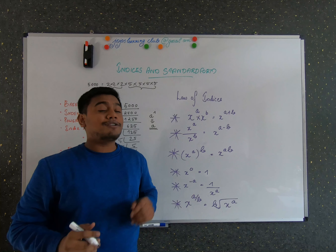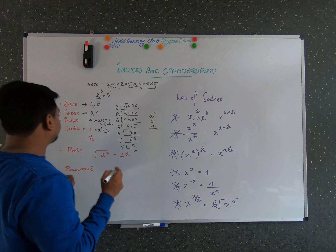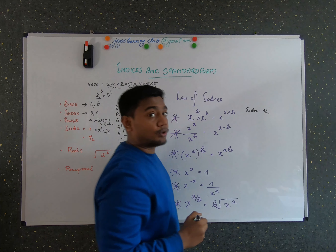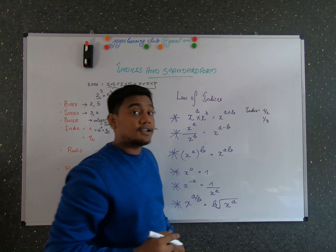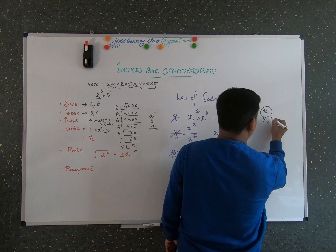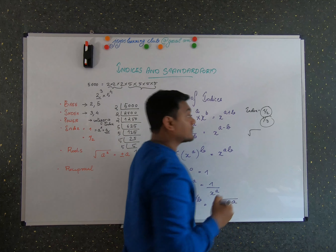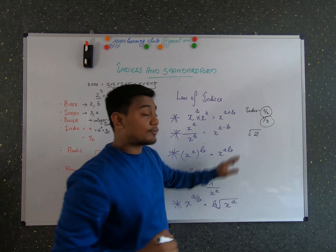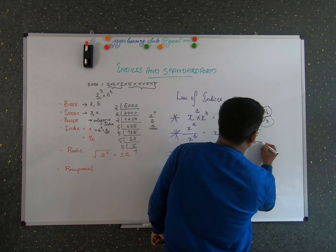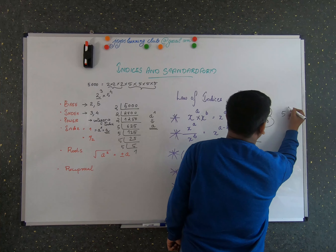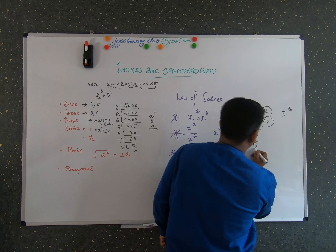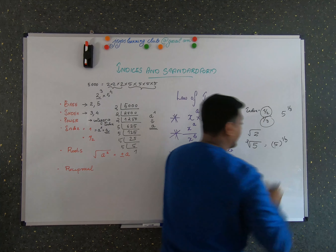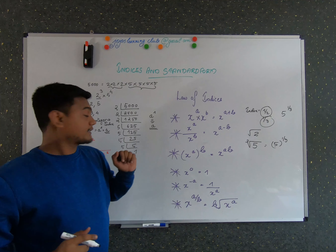When the index is a fraction — for example 1/2 — it becomes a root. When the index is 1/2 we call it a square root, and when the index is 1/3 we call it a cube root. For example, 5 raised to the power of 1/3 can be written as the cube root of 5. This is nothing but the root form of that number.